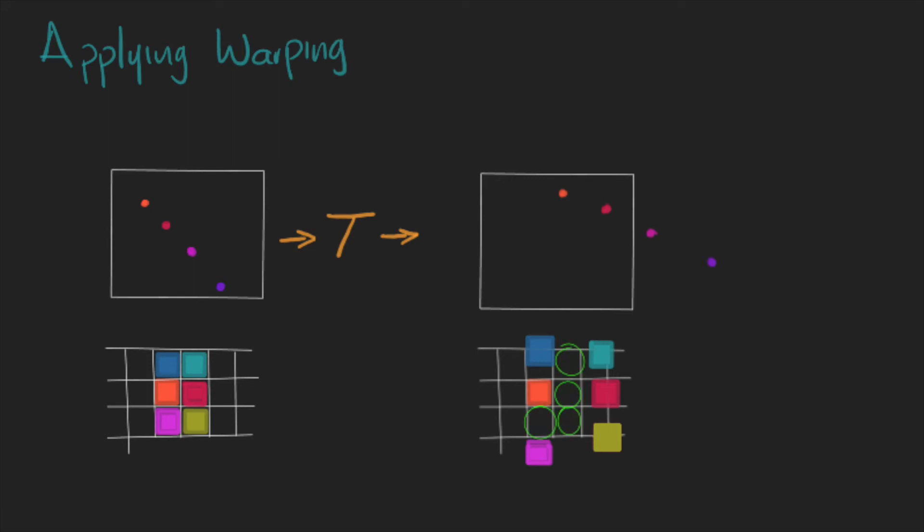And third, the bounding box of the new image might change because the new location can fall out of the bounds of the original image.